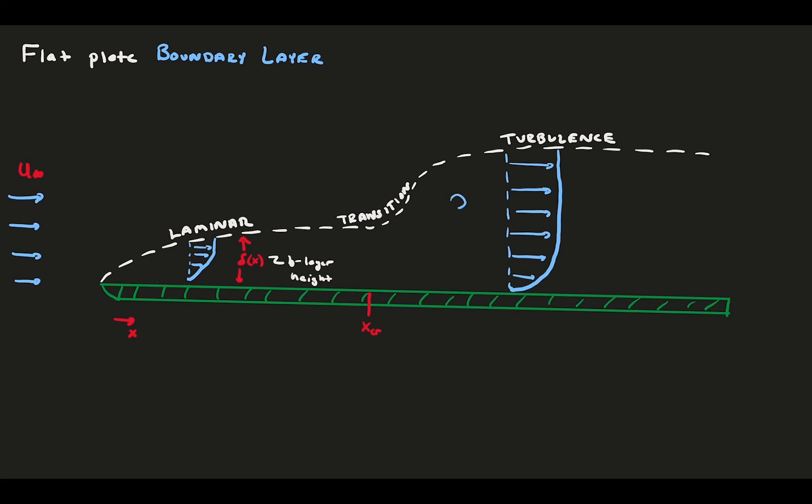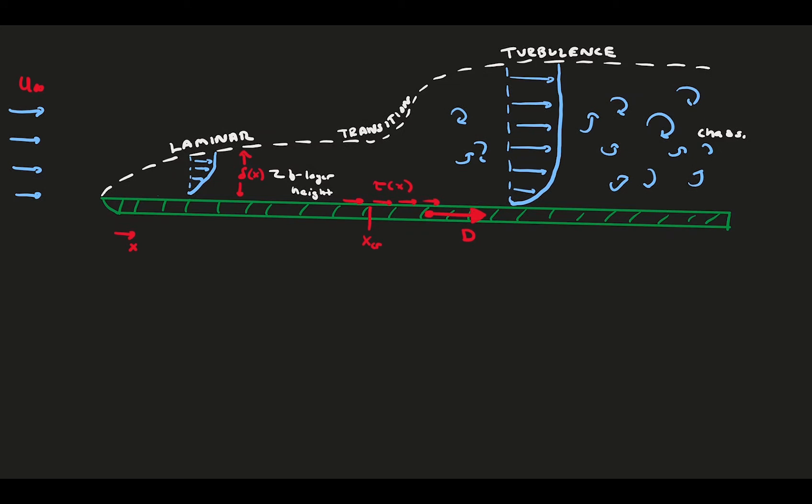Turbulent flow is unsteady, chaotic, and high energy. Both the laminar and turbulent boundary layers have velocity gradients at the wall and produce shear stress distributions that vary with X. This shear stress distribution integrates to a total drag on the plate. This is the drag that we're after.